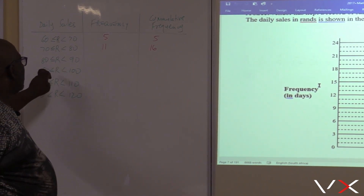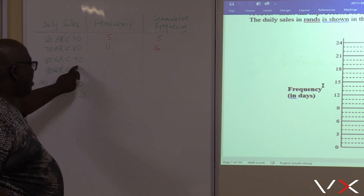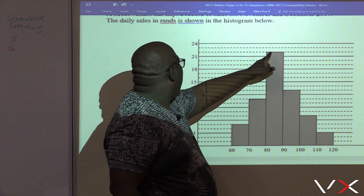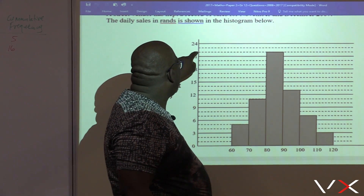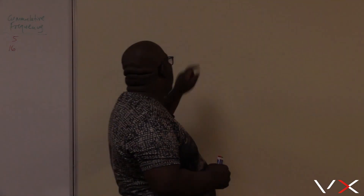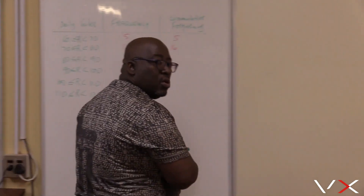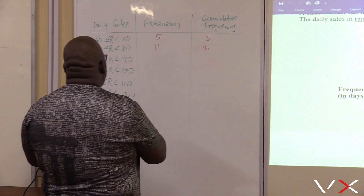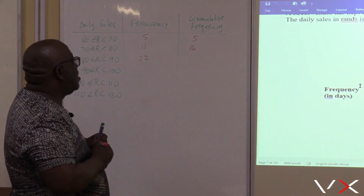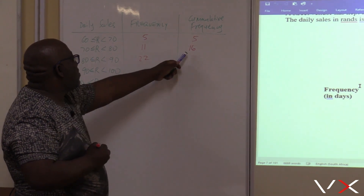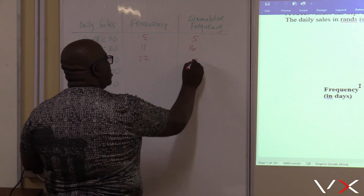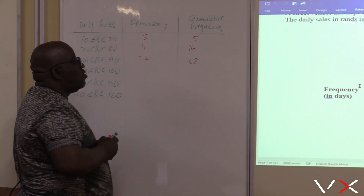Between 80 and 90 — what is the frequency? Reading from the histogram: 21, 22, 23, 24 — it is definitely 22. Between 80 and 90, the frequency is 22. For the cumulative frequency, you add 16 plus 22. 6 plus 2 is 8, and 1 plus 2 is 3, so that gives us 38. The cumulative frequency for 80 to 90 is 38.